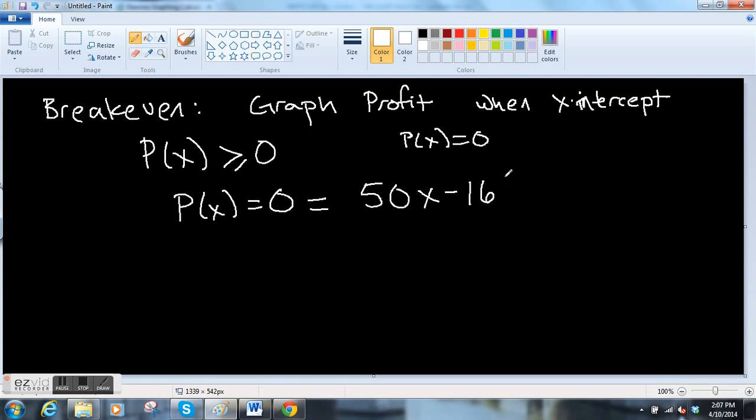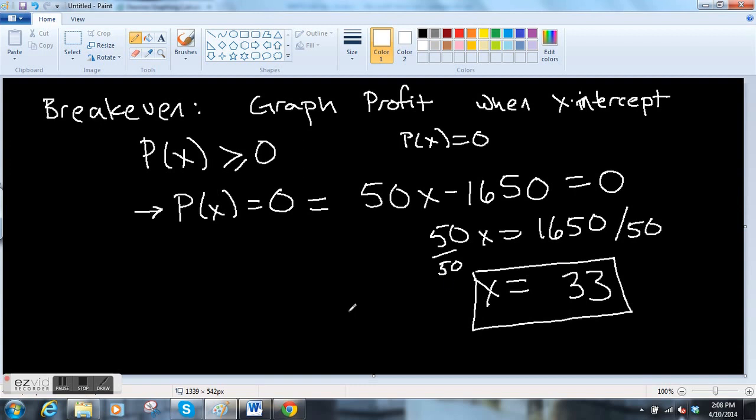Remember we just calculated the profit function is 50x - 1650. Now we have an equation and we can solve for x. So 50x = 1650, divide both sides by 50, and we get x = 33. This tells us that she has to sell 33 necklaces in order to break even. Once you sell 34 you're making money; if you sell 32 you're still not making money.